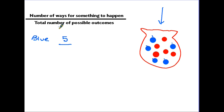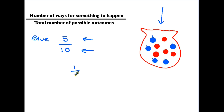Then we put the line. The bottom is the total number of possible outcomes. There are 10 counters in there, so there are 10 possible outcomes. All this wording simply says: out of 10 counters altogether, 5 of them are blue, so the chances of getting a blue counter are 5 out of 10. Now we simplify that fraction — 5 out of 10 simplifies to 1 out of 2, so the probability is a half. If you think about it logically, half of them are blue, so the probability is a half. It is not as complicated as the formula suggests.